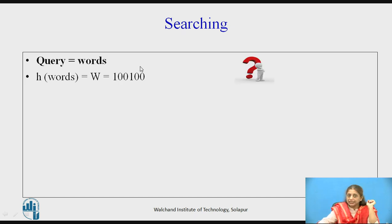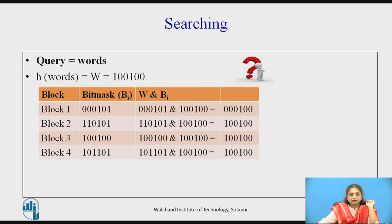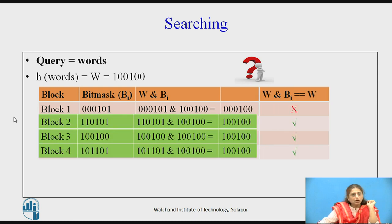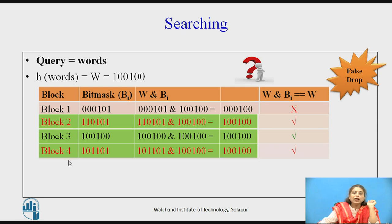The next example: the query is 'words'. Find out in which block this word is occurring — pause the video and try to find the result. Here, 100100 is the bit mask for this query, and we AND it with every block bit mask — b1, b2, b3, and b4. Three blocks are qualifying blocks because the result is the same as the query. We do actual sequential searching to find whether every block contains the word 'words'. But from actual searching we find false drops for block 2 and block 4 — though the bits are set the same as the block masks, the word 'words' is not present in the second block or the fourth block. So bits are set but the word is not present — this is how a single word query is searched.